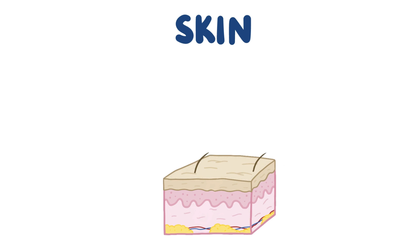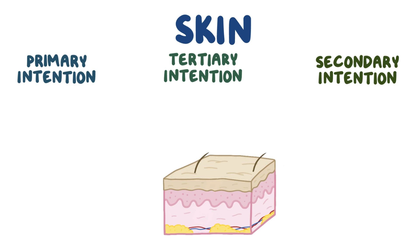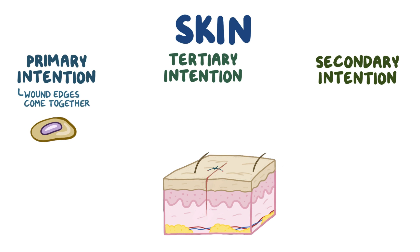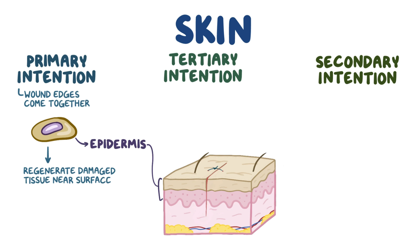When it comes to the skin, which is often the most visible tissue that's damaged, wound healing occurs by primary, secondary, and tertiary intention. Healing by primary intention is when the wound edges come together, like what happens when two wound margins are stitched or sutured together. When this happens, stem cells in the epidermis, or uppermost layer of skin, are brought close together and can regenerate the damaged tissue near the surface of skin, leaving a minimal scar.